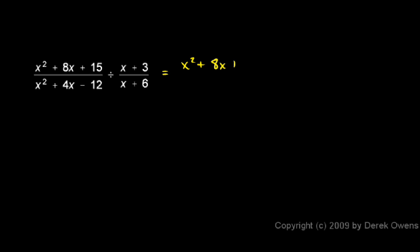So I'll rewrite the whole problem like this: x squared plus 8x plus 15 over x squared plus 4x minus 12, I've just rewritten the first fraction, it's going to be that times x plus 6 over x plus 3.